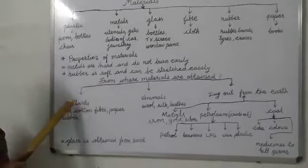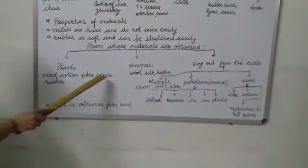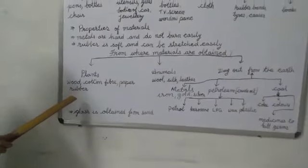We get materials from plants, animals. Some materials are dug out from the earth. We get wood, cotton fiber, paper, rubber from plants.